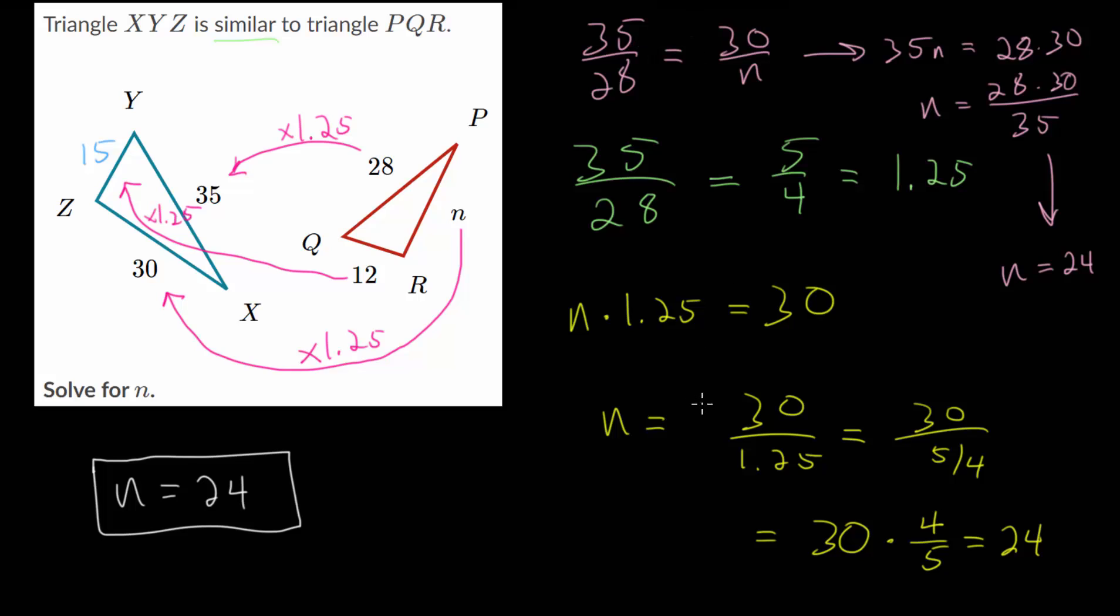So there are two different approaches. You can either set up this equation where you are looking at the proportionality of the sides, the ratios of the corresponding sides, or you can figure out what that proportionality constant is that you're multiplying by to go from the smaller triangle to the bigger one. Or, like I mentioned earlier, you could also go the other direction. You can start with the bigger triangle and ask, what are you dividing by to go back to the smaller triangle?